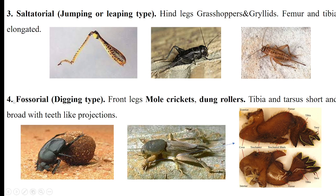The fossorial type, or digging type, of legs are seen in dung beetles and mole crickets. Dung beetles make a ball of dung, take it to their ground homes, dig a hole with their forelegs, place the ball inside, and lay eggs inside it. The tibia and tarsus are short and broad with tooth-like structures that help in digging the soil.